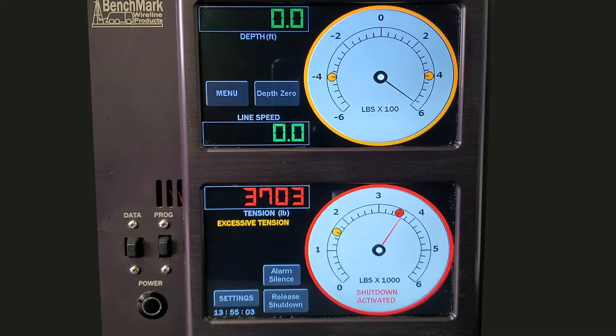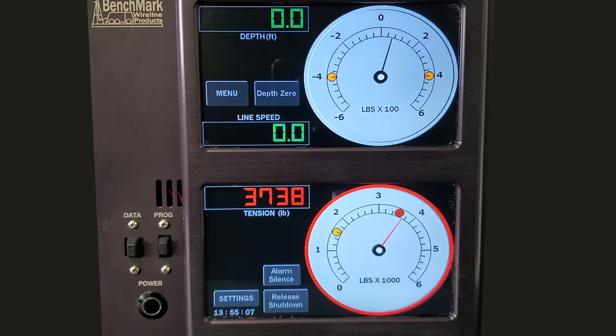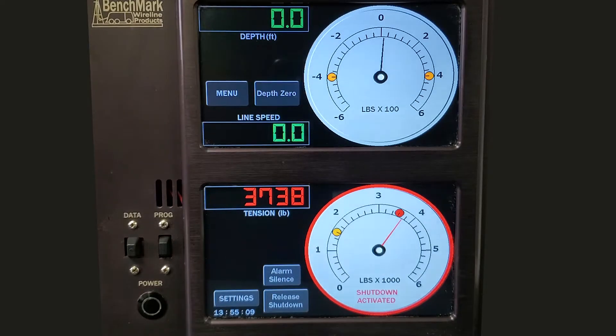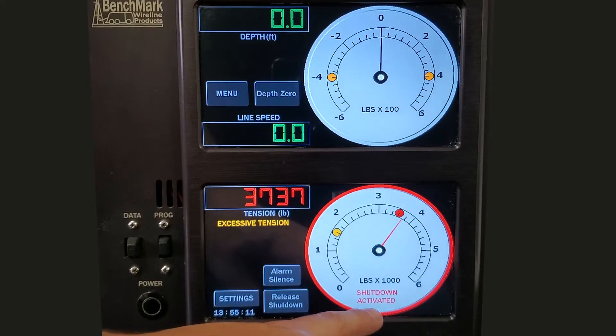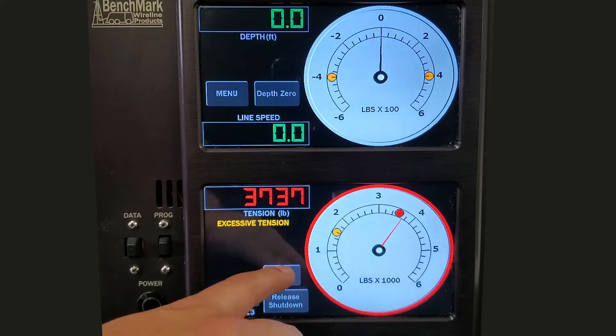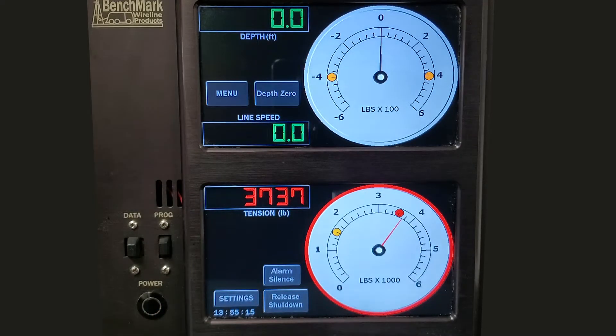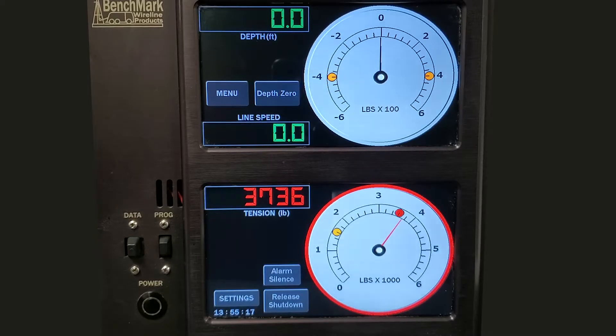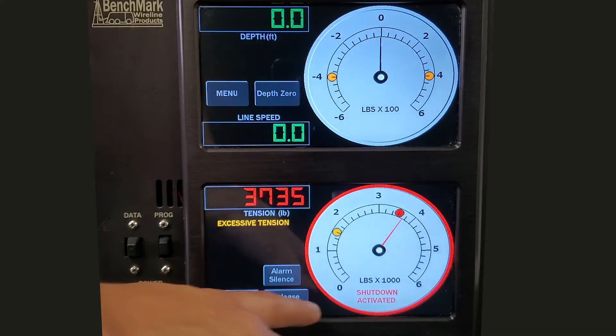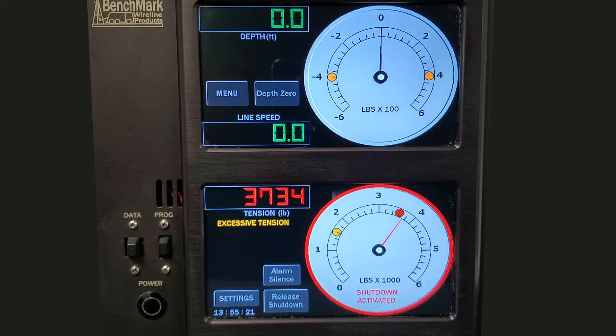If the tension continues to increase and passes the red bubble, the upper tension limit, the shutdown process will be activated. An alarm will sound, the excessive tension warning will blink in yellow, the tension values will be red, the dial will have a red ring around it, the shutdown activated warning will flash in red, and the system will automatically stop the winch.